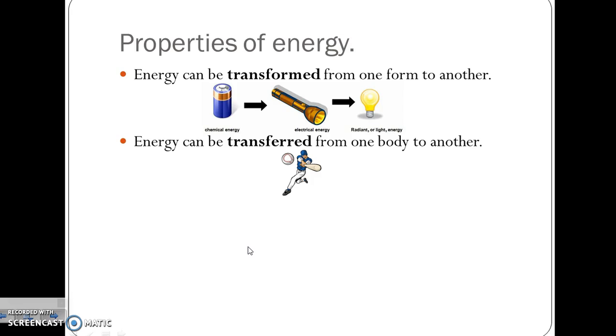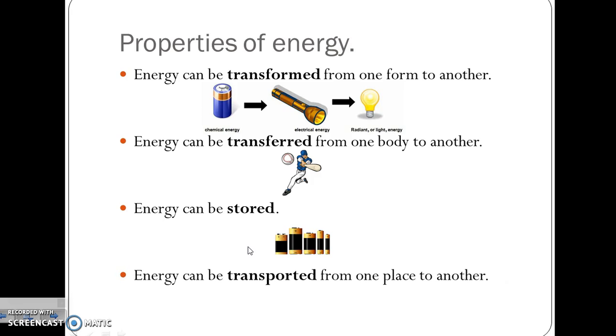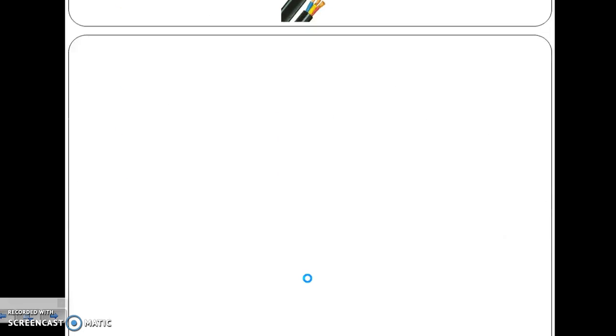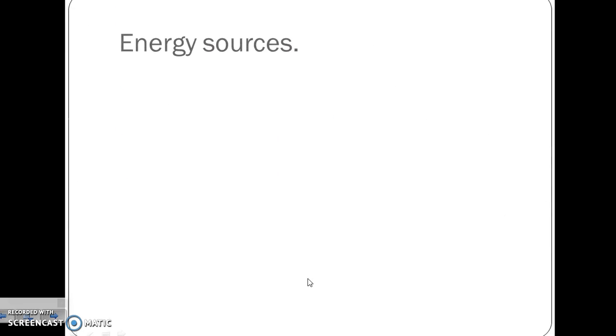Energy can be stored, for example using these batteries. And finally, energy can be transported from one place to another, for example electrical energy is transported through electric cables like these ones. So remember, the properties of energy are: it can be transformed, transferred, stored, and transported.